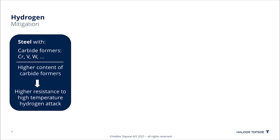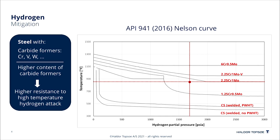The way material is selected is based on the Nelson curve. The Nelson curve is published by the American Petroleum Institute. It is made from a collection of data from industry and from laboratory tests. Curves for each material have been drawn based on these data. For conditions represented below the curve, the material is considered safe to use. At conditions above the curve, the material is considered susceptible to high-temperature hydrogen attack. The red dot here on this slide marks the condition of our hydroprocessing reactor. For the conditions chosen here, we need to use two and a quarter chrome, one moly to have sufficient resistance.